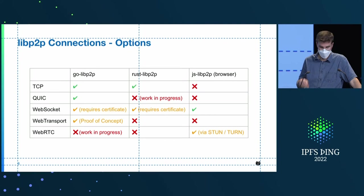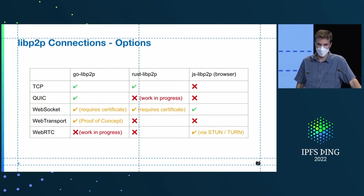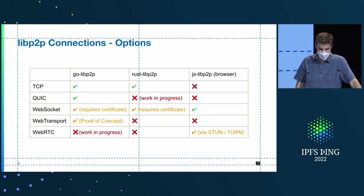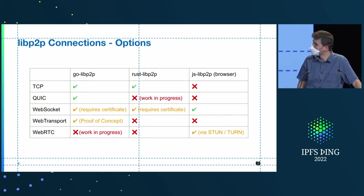This is a problem for us because we want to connect browsers to GoLibP2P nodes. Imagine a browser wants to go to the DHT and find where a certain CID is, and then download it from there — we can't use TCP and QUIC for that. Browsers have therefore developed a bunch of different protocols that more or less make it possible for the browser to control the security properties of that connection. These are WebSocket, WebTransport, and WebRTC. I'll go into the problems that each of those pose for LibP2P.